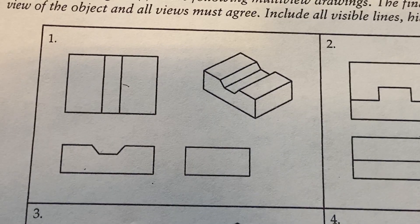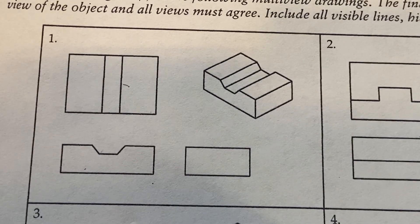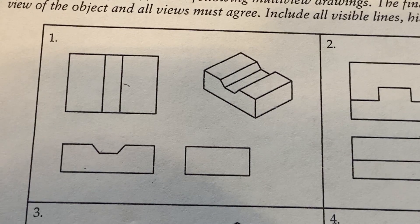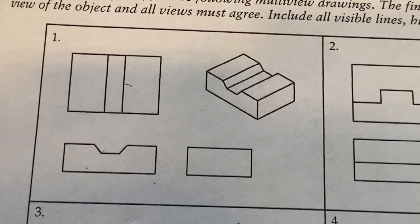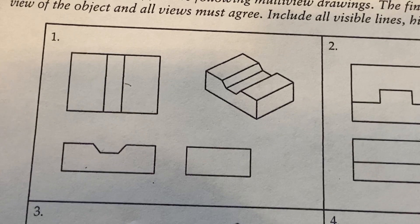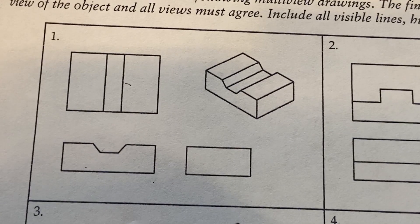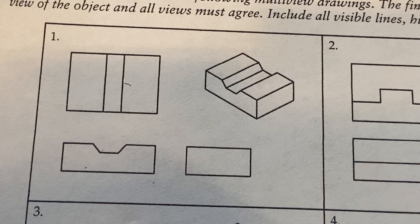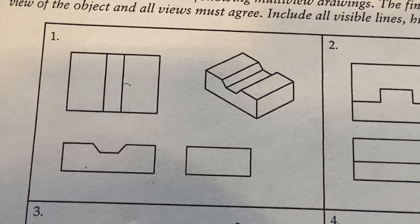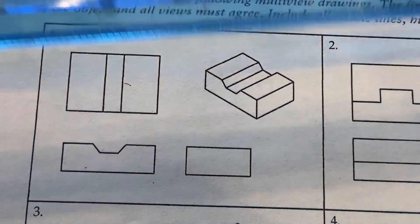All right, so we are here working on review activity 5-4, and the activity is asking for us to sketch missing lines here. It wants us to include any visible lines, hidden lines, and center lines that are needed.